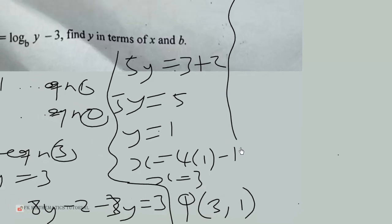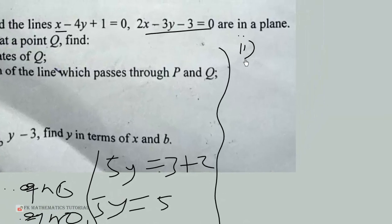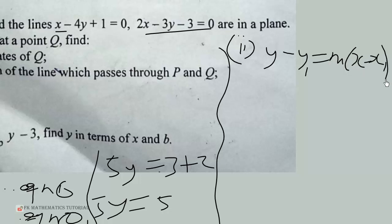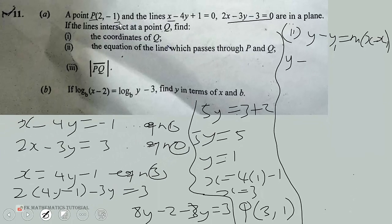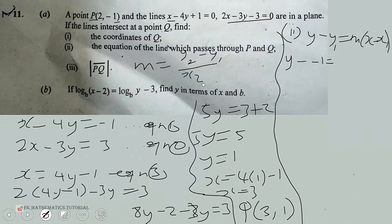Now that we know the coordinates of Q, we can find part ii — the equation of the line that passes through P and Q, given by y minus y₁ equals m times (x minus x₁). We choose P(2, -1) as our point, so y minus negative 1 equals m times (x minus x₁). The gradient m is found using m equals (y₂ minus y₁) over (x₂ minus x₁).